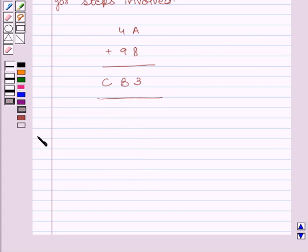Let us now move on to the solution. Now first of all, we will rewrite the given question. That is 4A plus 98 gives CB3.